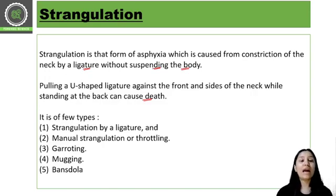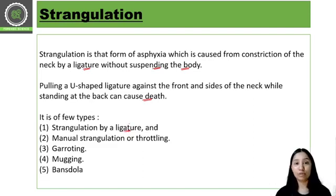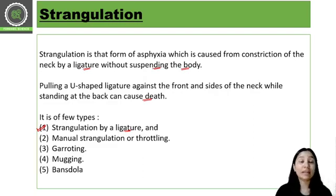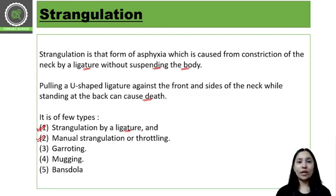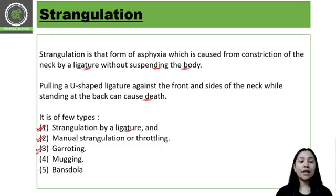We have different types of strangulation. First is strangulation by ligature — using a rope, dupatta, sari, or anything as a ligature. Second is manual strangulation, also called throttling — pressing someone's neck without suspending the body. Third is garroting, which involves using sharp metal wires to constrict the neck.